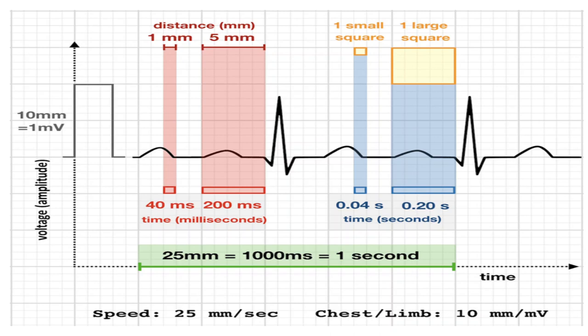If you see a normal ECG strip, you need to first understand that the small box corresponds to one millimeter, and the large box which constitutes five small boxes corresponds to five millimeters. So small box is one millimeter and the large box is five millimeters. Similarly in the y-axis also, the smaller one is one mm and the larger one is five mm.